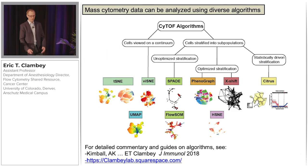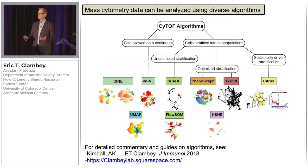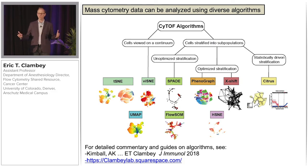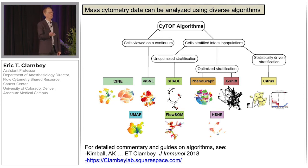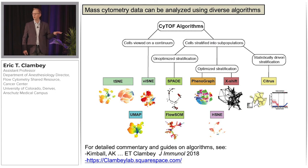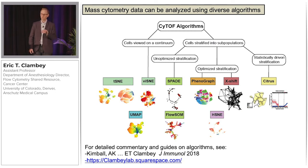Across the spectrum of CyTOF analysis algorithms, on the left are algorithms that allow a view of cells on a single-cell continuum, and then there are a variety of clustering or stratifying algorithms. Please note that clustering algorithms are not equivalent — some have defined metrics to identify the optimal number of clusters, while others allow the user to specify, say, 200 nodes, meaning user bias can profoundly influence data visualization. In our paper, we provided detailed commentary and notes on five of these algorithms, and since then we've provided additional details on our lab website.